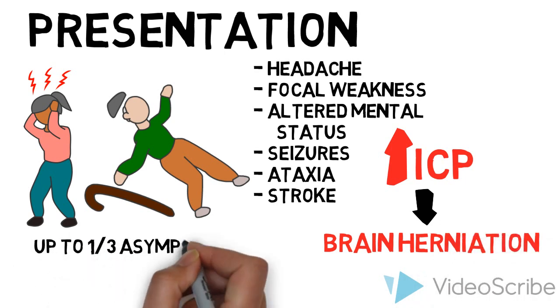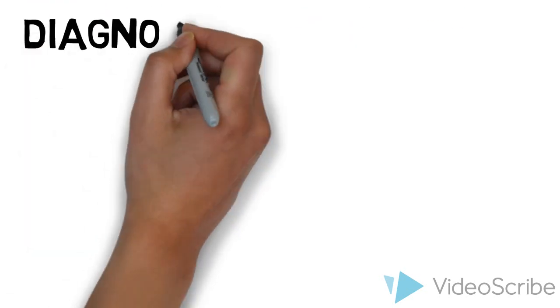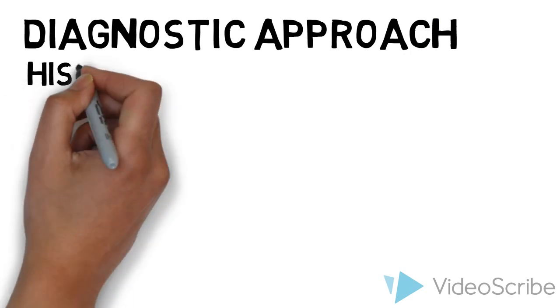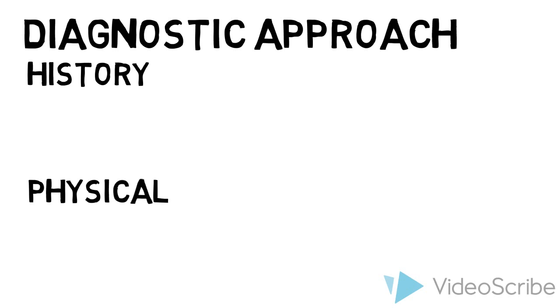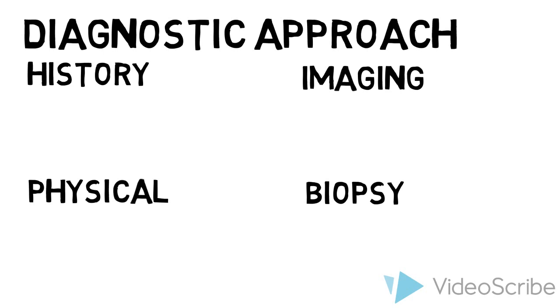Up to one-third of patients with brain metastases are asymptomatic. In a patient with suspected brain metastases, the diagnostic approach includes a history and physical exam, including a neurological examination, brain imaging, and a biopsy if the diagnosis is unclear.